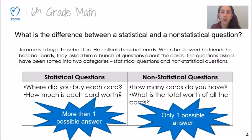But as I look at the non-statistical questions, I realize that there's only one answer to those questions. How many cards do you have? He can only answer that with one answer. Or what is the total worth of all the cards? That's going to be one singular number. So statistical questions have more than one possible answer, while non-statistical questions don't.